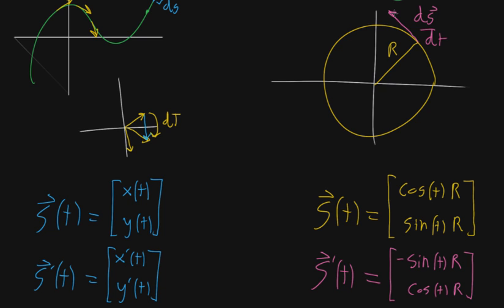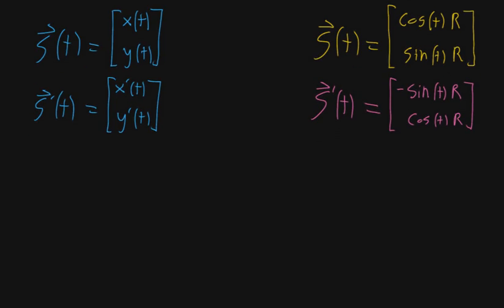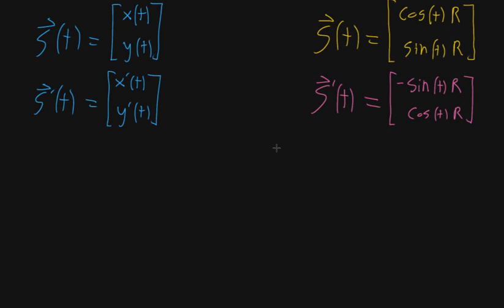This derivative can be interpreted as the tangent vector, but it might not be a unit vector — we want a unit tangent vector, and this only promises us the direction. So what we do to normalize it and get a unit tangent vector function — which I'll call capital T of lowercase t (capital T for tangent vector, lowercase t for the parameter) — is divide the vector-valued derivative by whatever its magnitude is as a function of t.